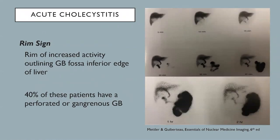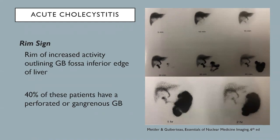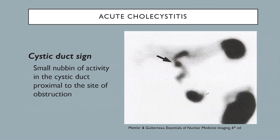This is another example of acute cholecystitis. Radiotracer activity in the liver, excretion into the common bile duct, and progression into the small bowel, but no radiotracer activity is seen in the gallbladder even at one and two hours, compatible with acute cholecystitis. Pay attention to this rim of activity outlining the gallbladder fossa along the inferior edge of the liver — this is a rim sign. With acute cholecystitis and rim sign, 40% of these patients have a perforated or gangrenous gallbladder, so it's important to communicate that finding to the referring physician or surgeon.